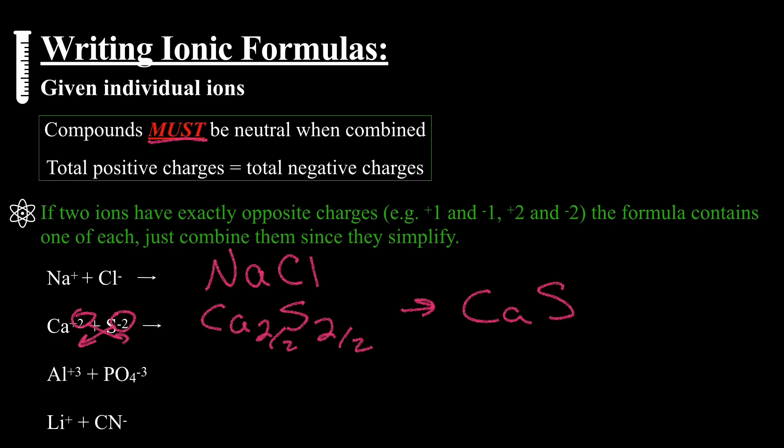Al plus three, plus PO4 negative three. There's a polyatomic. Threes will cross and come down, leaving the sign, positive, negative, up. Just bring the three. We can simplify those by dividing by three, and we're left with AlPO4.